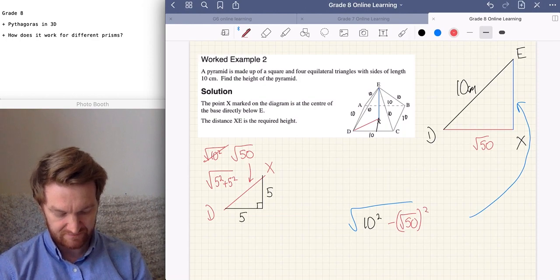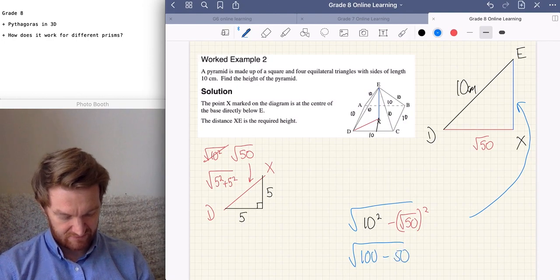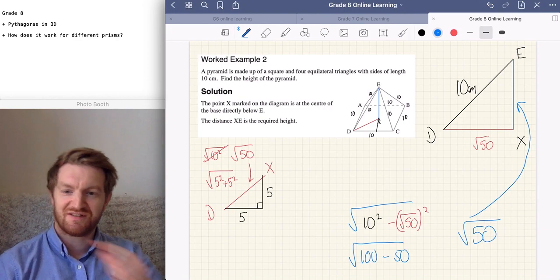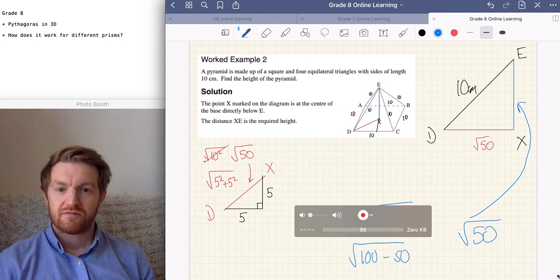Don't forget, those squares are going to cancel out. So, it gives us the square root of 100 minus 50, and it's equal to the square root of 50. Because it's equilateral, of course, the square root of 50.